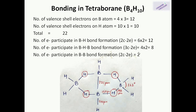In B₄H₁₀, the BB bond length is 171 pm, the bridging BH bond length is 137 pm, another bridging bond is 143 pm, and the BH terminal bond length is 110 pm. The bond angle is 122°.